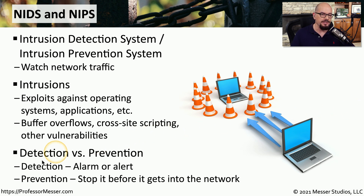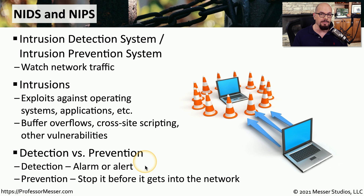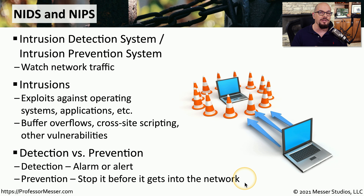The intrusion detection system is designed to simply alarm or alert if a problem occurs, and an IDS does not commonly have a way to block that communication in real time. Because of that, we don't commonly see a single IDS device on our network. It's usually an intrusion prevention system, which has the ability to block information in real time as it's going through the IPS. This prevention capability is very valuable, especially when you want to be sure that none of that malicious traffic is getting into your network.